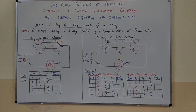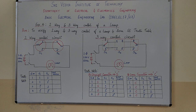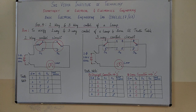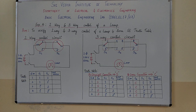The most common use of two-way switching connection is staircase wiring, where a light point can be controlled from two different locations. One switch may be installed at the ground floor at the beginning of the stairs, and the other switch may be installed at the upper floor where the stairs end. The light point can be controlled by using these two switches.